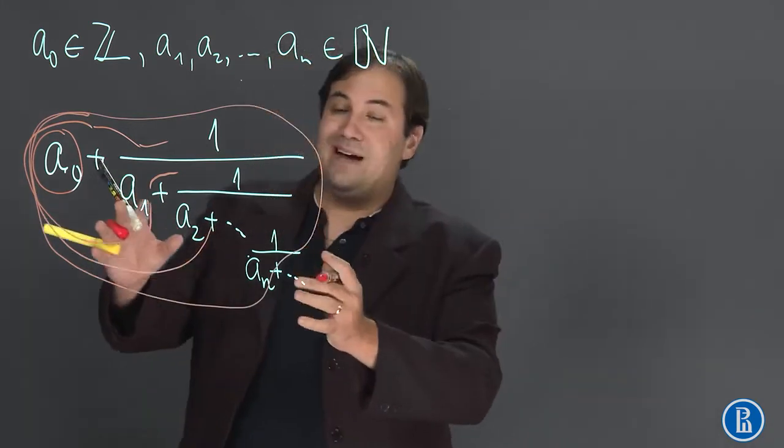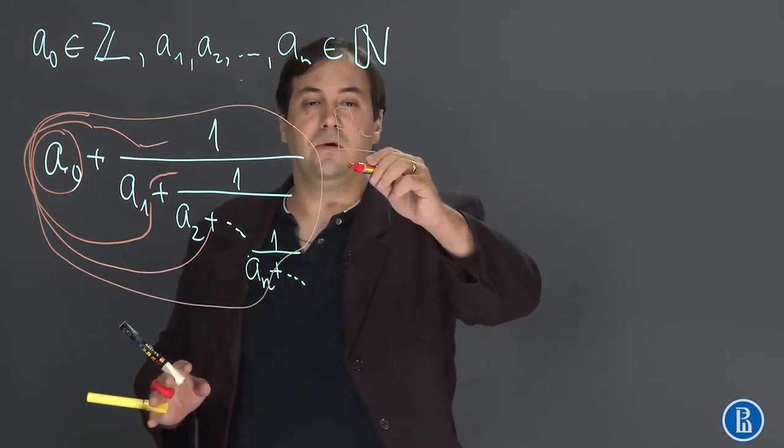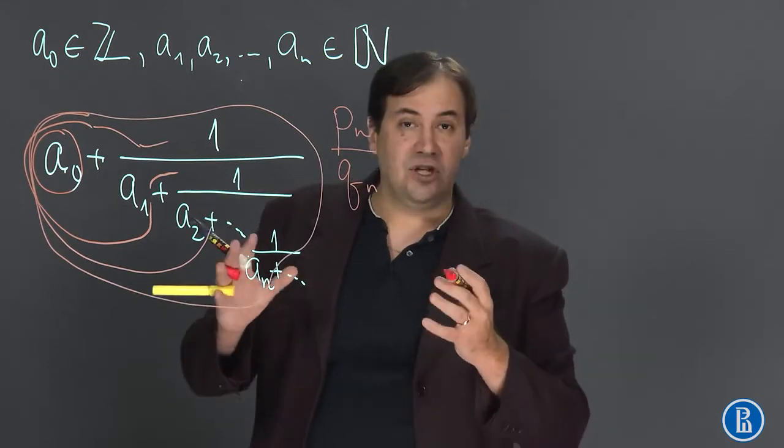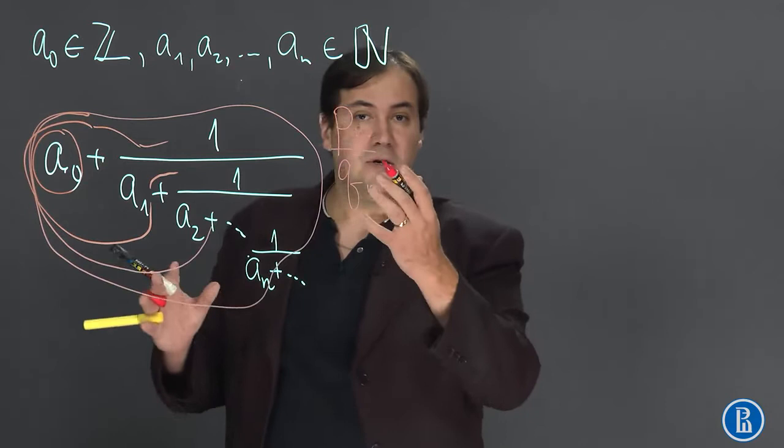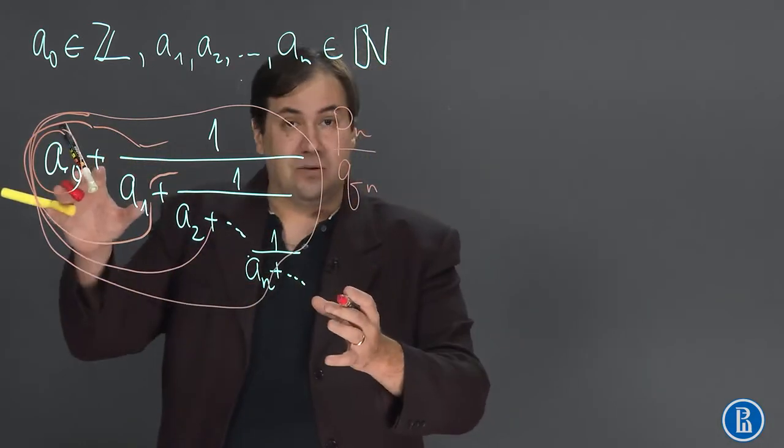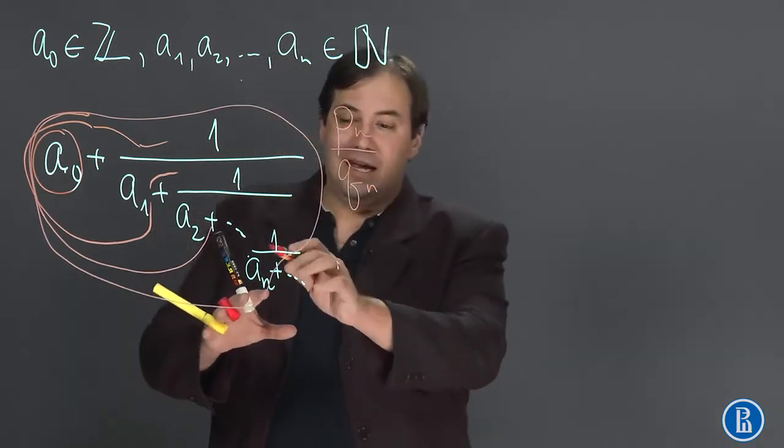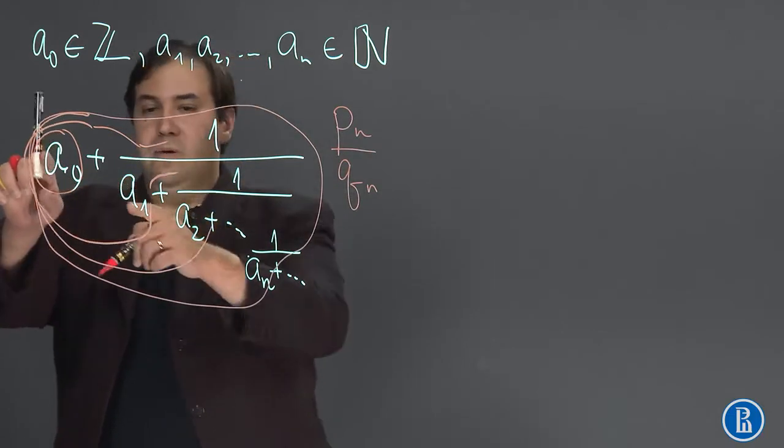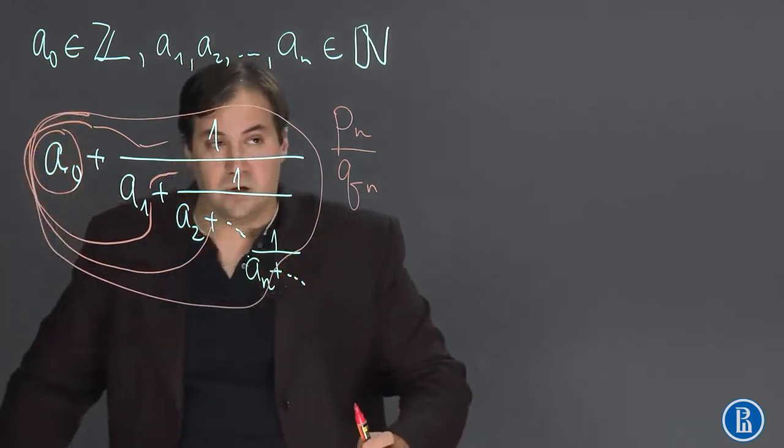We denote this finite part as P_n over Q_n. We call it a convergent. A convergent is a rational number obtained from the Continued Fraction by simply deleting everything after a_n. So we have P0 over Q0, P1 over Q1, P2 over Q2 and so on.